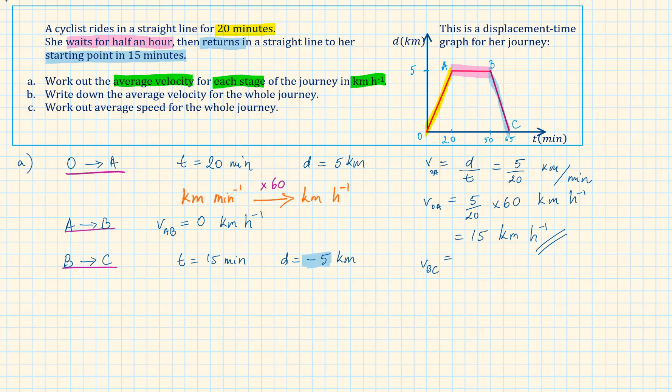The velocity is equal to minus 5 over 15 km per minute. Timesing this by 60, we have minus 20 km per hour.